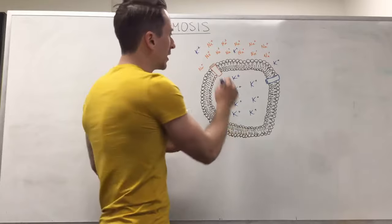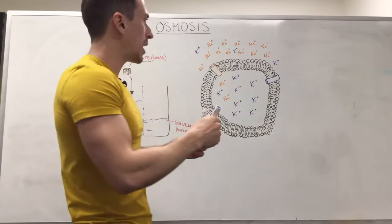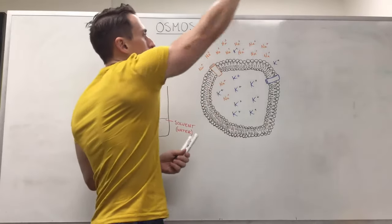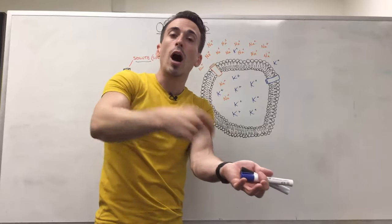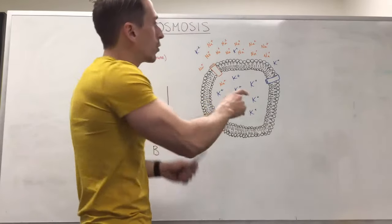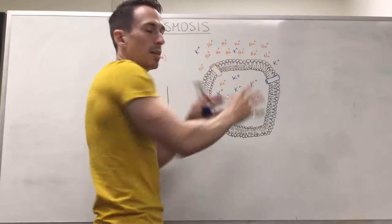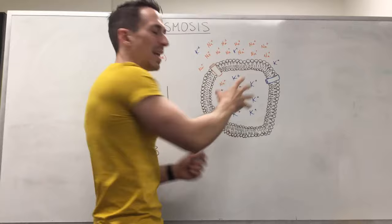But in this scenario the lids of the particular channels are closed. Now let's just say you were to introduce even more sodium outside this cell. The way you could do this is through a drip. You could put high amounts of sodium into the venous system and what you'll find is sodium starts to accumulate.